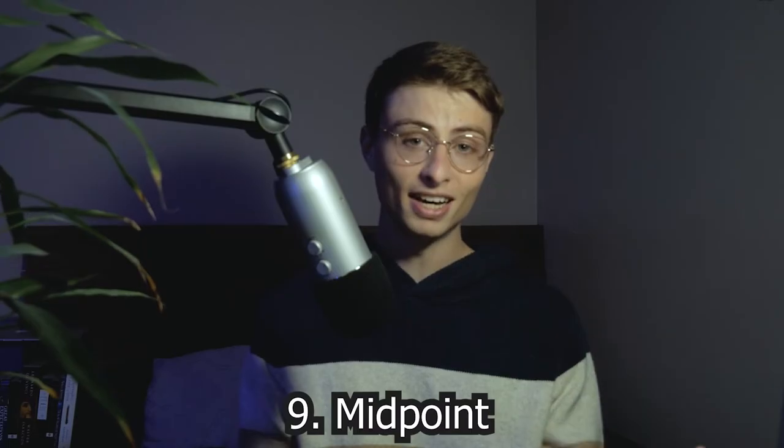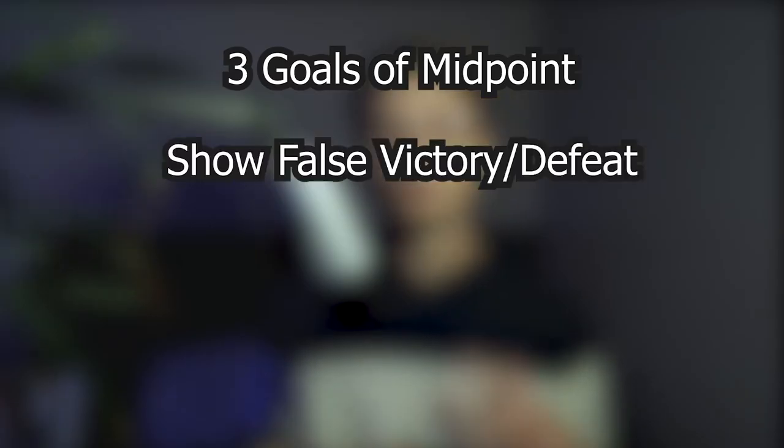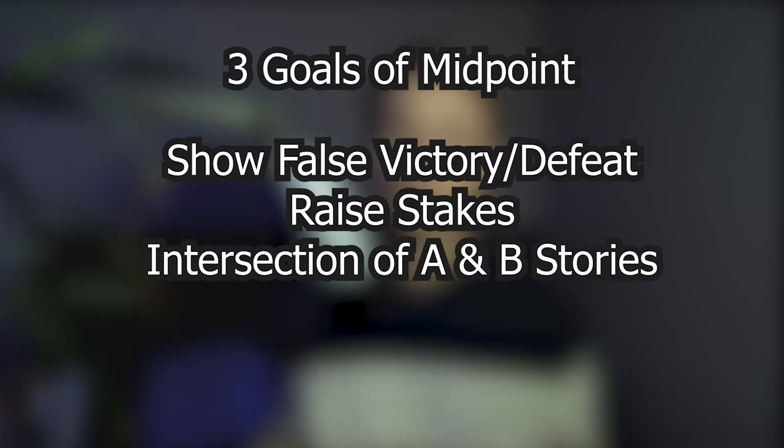This is important to know for the next beat — beat nine, the Midpoint. The midpoint takes place exactly 50% of the way into your novel. There are three main goals for this beat: show either a false victory or a false defeat, raise the stakes, and show an intersection of the A and B stories. You'll typically go with whichever coincides with your character's momentum in the previous beat. If they were making positive progress, this is where they have a false victory; if they were struggling, this is the time for a false defeat. It's a false victory or defeat because we're only halfway done, and your character hasn't confronted their need yet — they've been blindly chasing their want and can't truly solve the problem until they do.